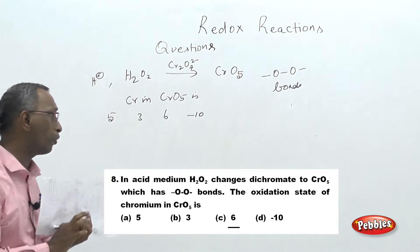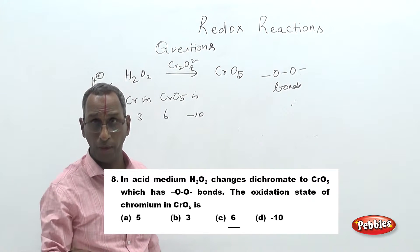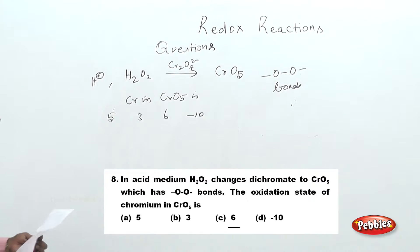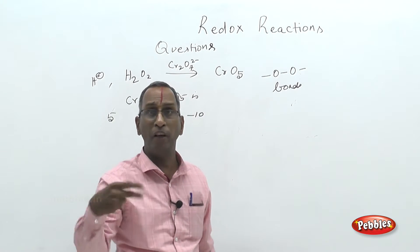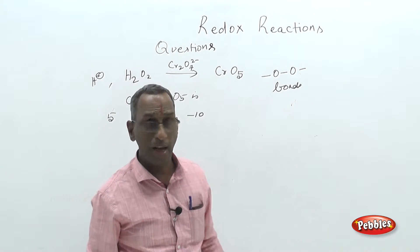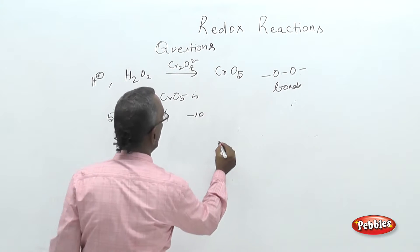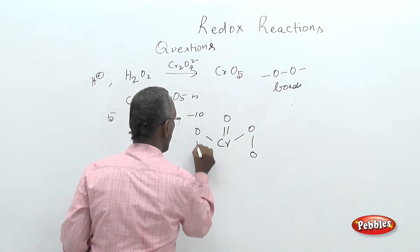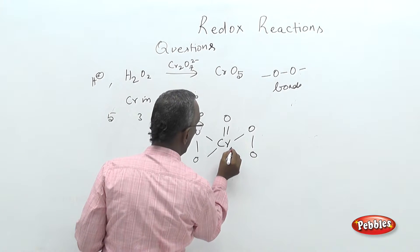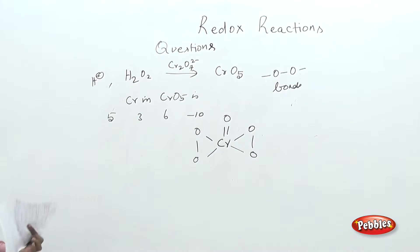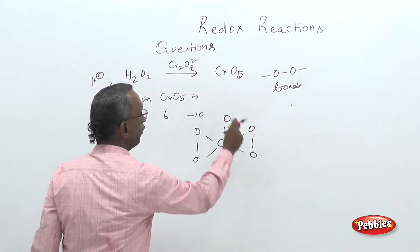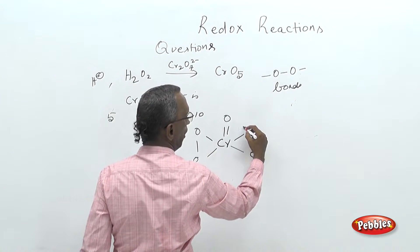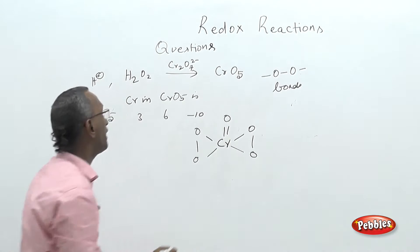Chromium compounds are always used as oxidizing agents, so chromium will have a higher, positive oxidation state — minus 10 is ruled out. Chromium pentoxide has 5 oxygen atoms and only one chromium. The structure shows chromium connected with 1, 2, 3, 4, 5 oxygen atoms. It has been stated that it contains oxygen-oxygen peroxide linkages.